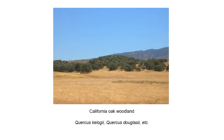Here are some examples of oaks in California — beautiful California oak woodlands with blue oak, Quercus douglasii, and black oak, Quercus kelloggii, seen in rolling hills with a lot of grass.